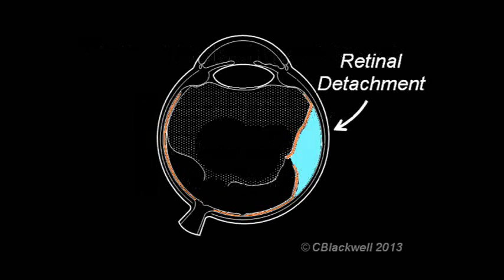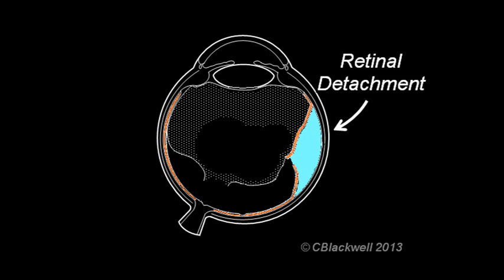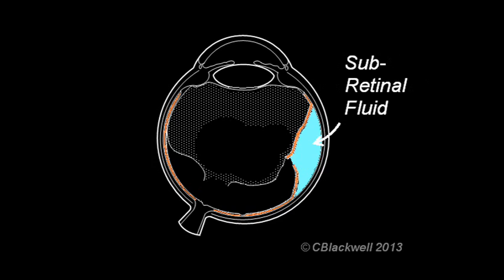With the detachment, there are two principal issues that have to be dealt with. One is the fluid that has accumulated under the retina, which is separating the photoreceptors from the pigment cells. Two is the pulling of the vitreous on the retinal tear, which has to be relieved or the repair will not be successful.